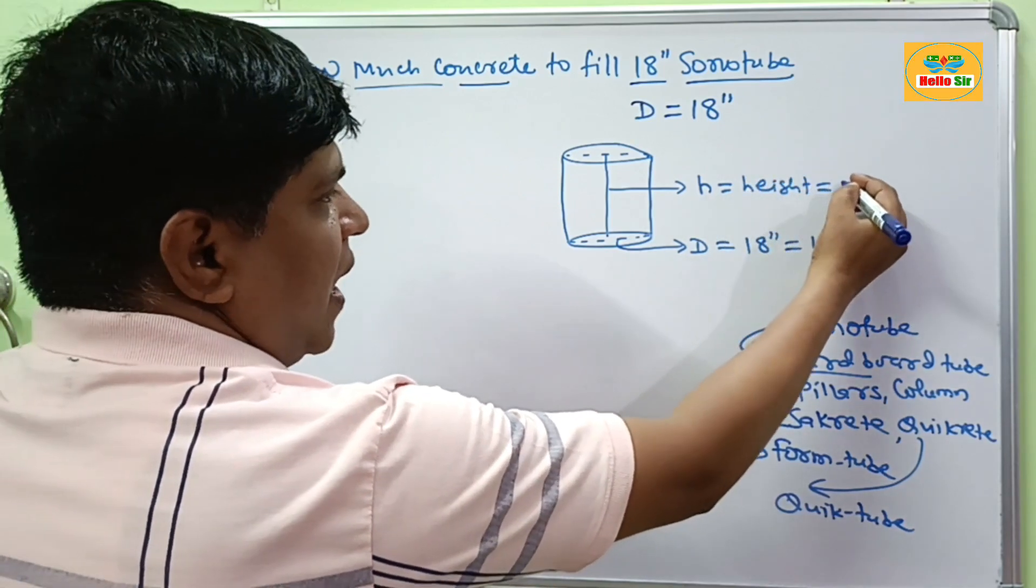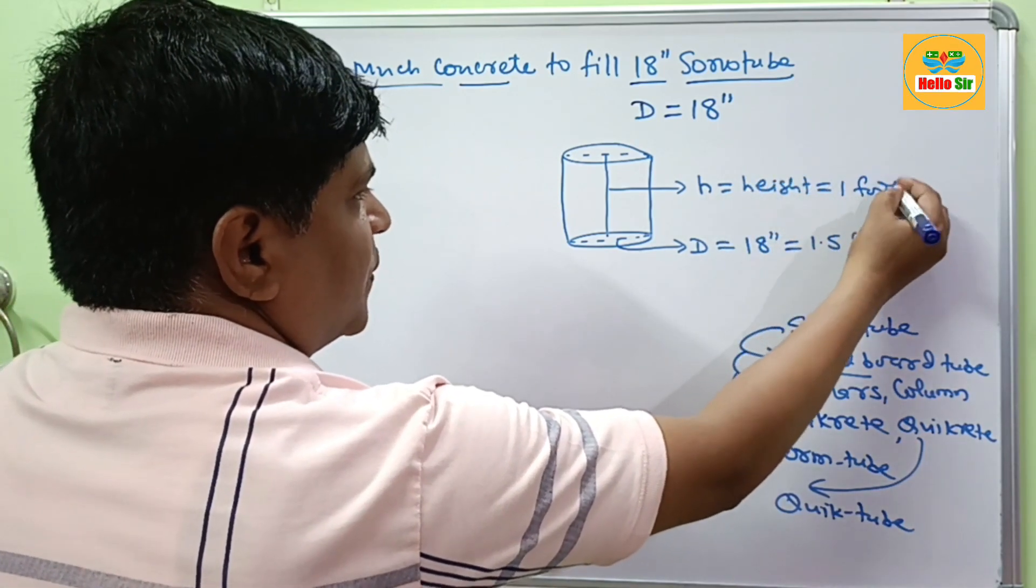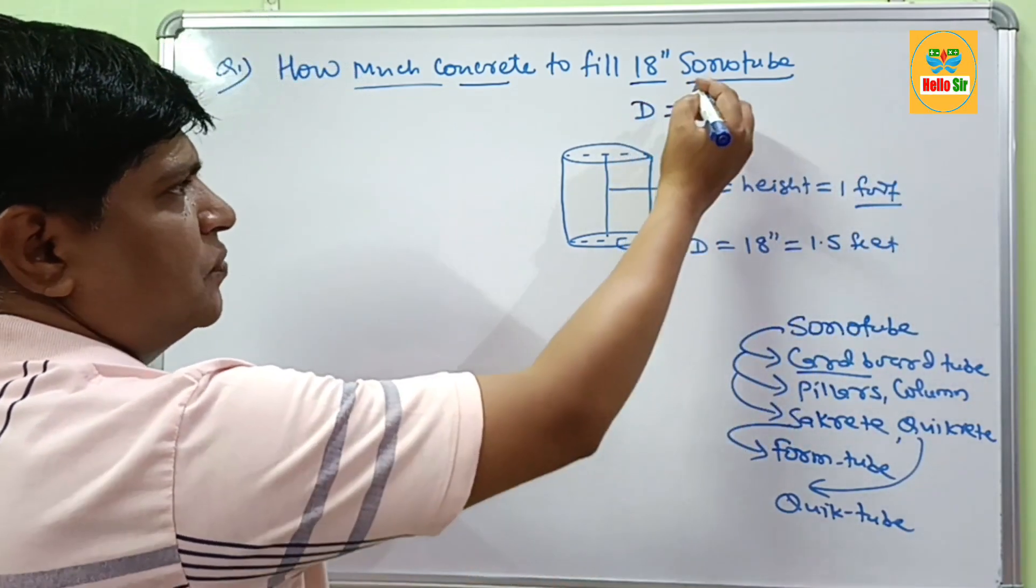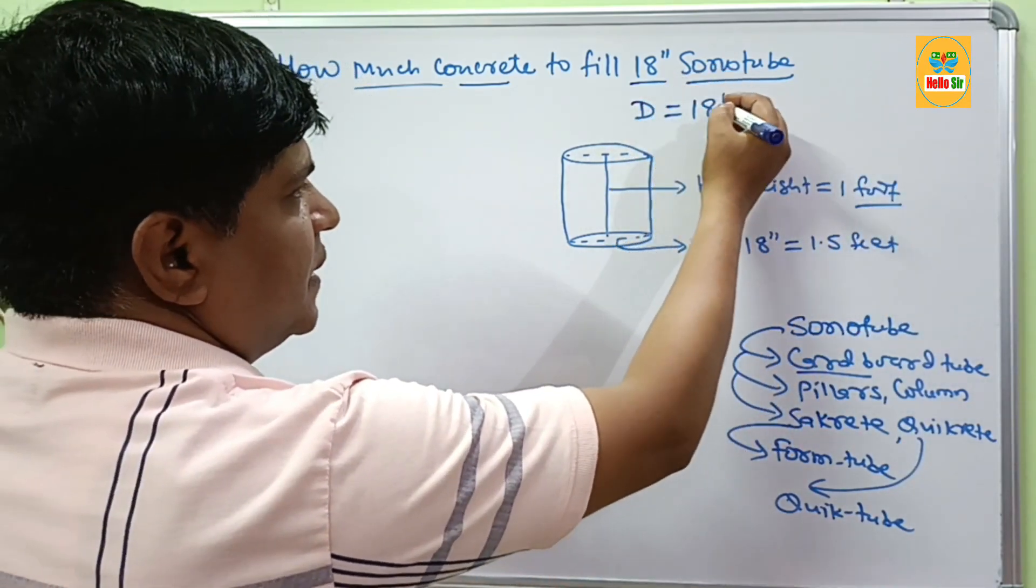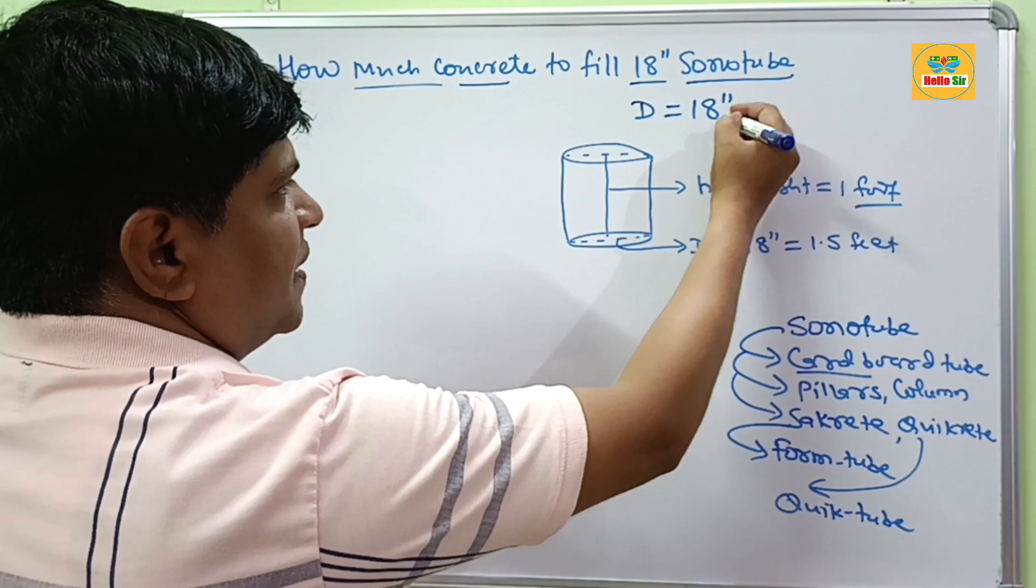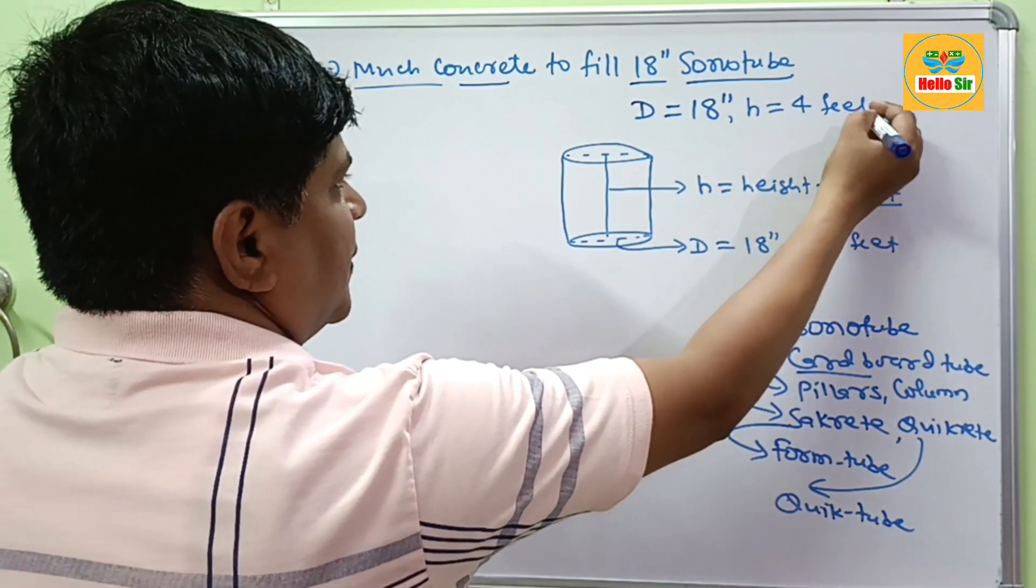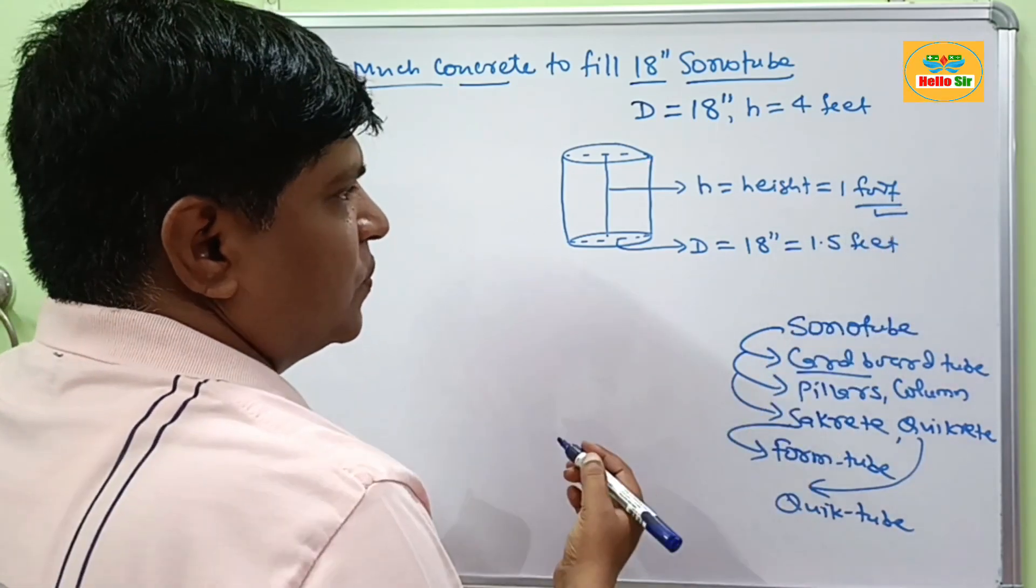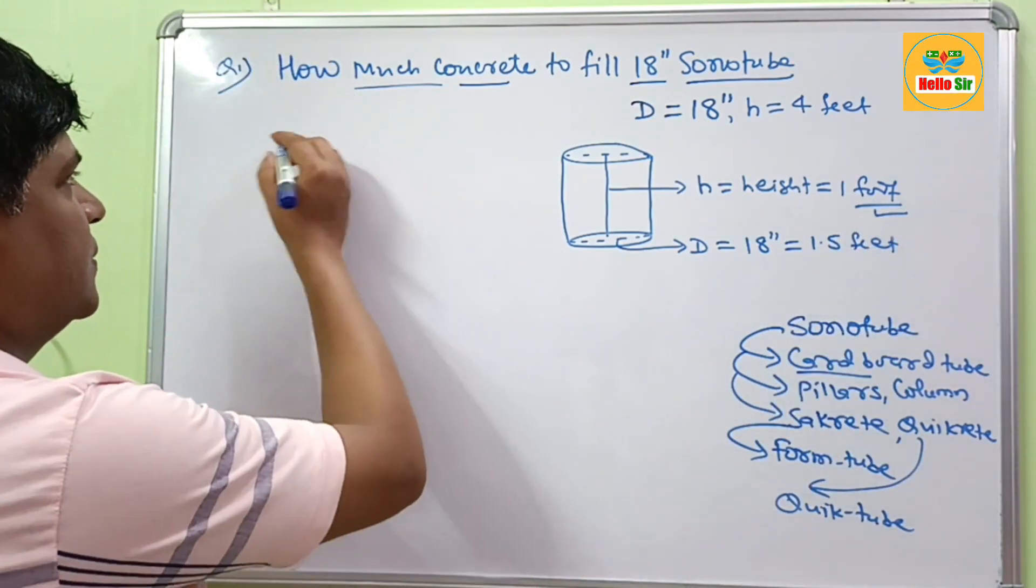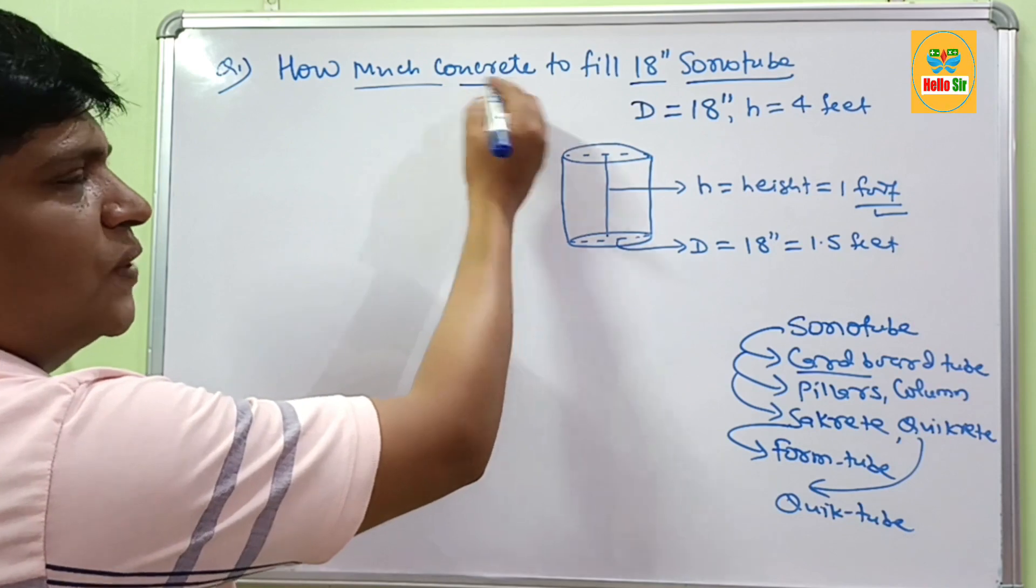First we calculate height for 1 foot. The general dimension of sonotubes is 18 inches in diameter and their height will be about 4 feet. First in this calculation, we calculate for 1 foot. Suppose how much concrete do I need?